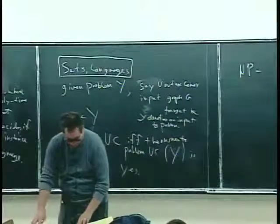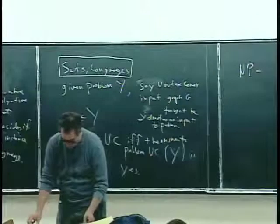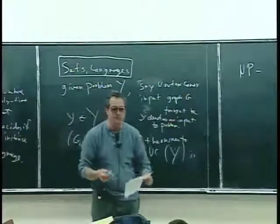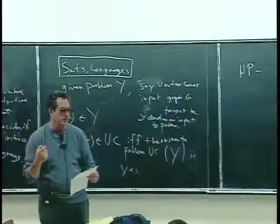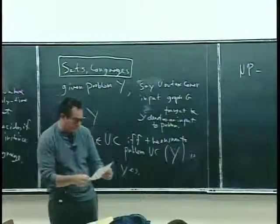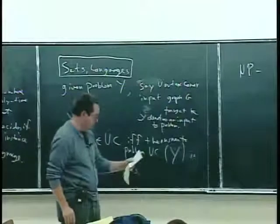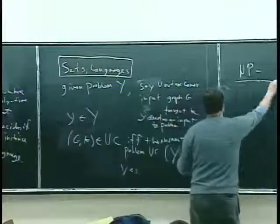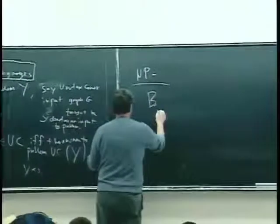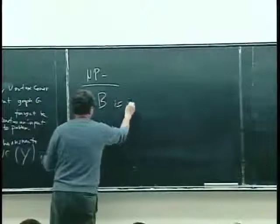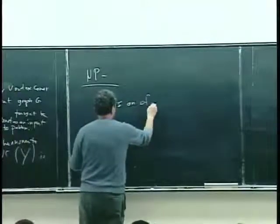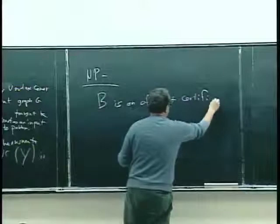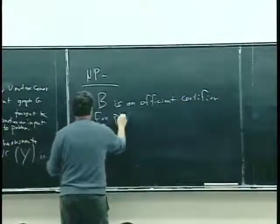But it turns out that informal definition is not what we actually use, and it's not just to make life more difficult. Here's the first case where the technical definition really has some meaning — it will allow us to prove something that otherwise we couldn't. So I want to define: B is an efficient certifier for problem Y.